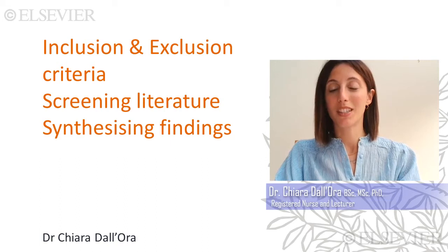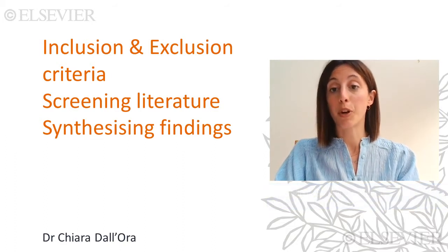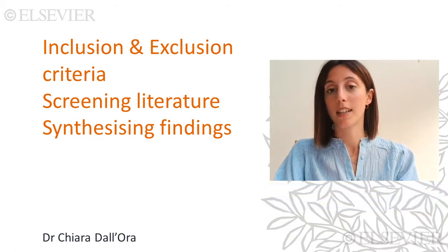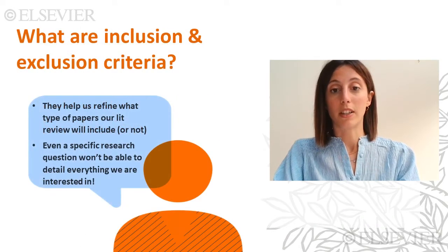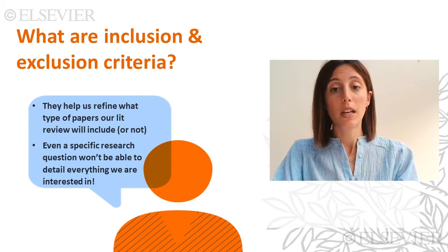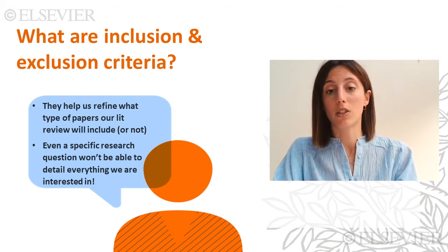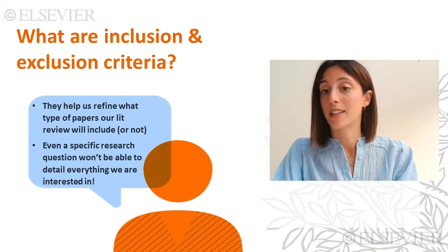Hello and thanks for watching this video where we will focus on choosing and applying inclusion and exclusion criteria, screening the literature, and bringing together or synthesizing the findings of your literature review. Inclusion and exclusion criteria are very important as they help us refine even more the type of papers we will include. Sometimes it is not possible to specify everything in a research question, so having some further description of what you're interested in comes in really handy.